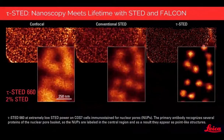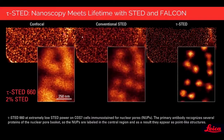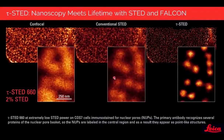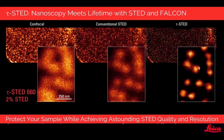Here is an example illustrating the strength of TauSTED. We have nuclear pores stained at the basket, appearing as tiny dots. We image them in confocal and also in STED with very, very low light dose — just 2% of our 660 nm STED line. Comparing confocal with conventional STED, we don't see much of a benefit. But with TauSTED, protecting the sample at really low STED light, we can achieve outstanding STED quality and resolution.